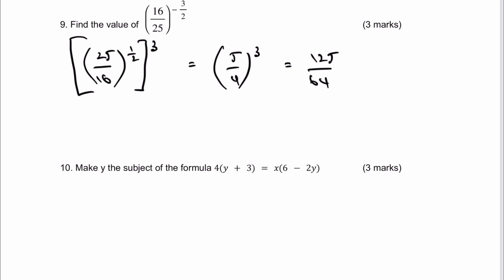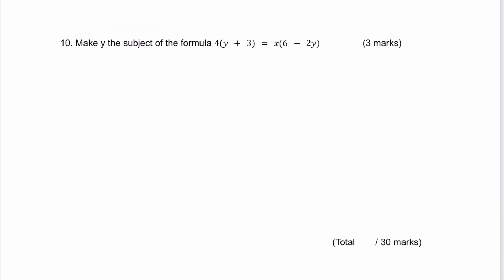Very final question on this particular worksheet. It is out of 30 marks. It's roughly speaking the kind of grade 6 type questions you would get at GCSE. What we've got to do here is make y the subject. You'll notice that I've got a value of y here and a value of y over here. So the job is really to get those two values of y on the same side of the equal sign. The first thing I'm going to do is expand the left hand side and I'm going to get 4y plus 12. The right hand side, I'm going to get 6x minus 2xy.